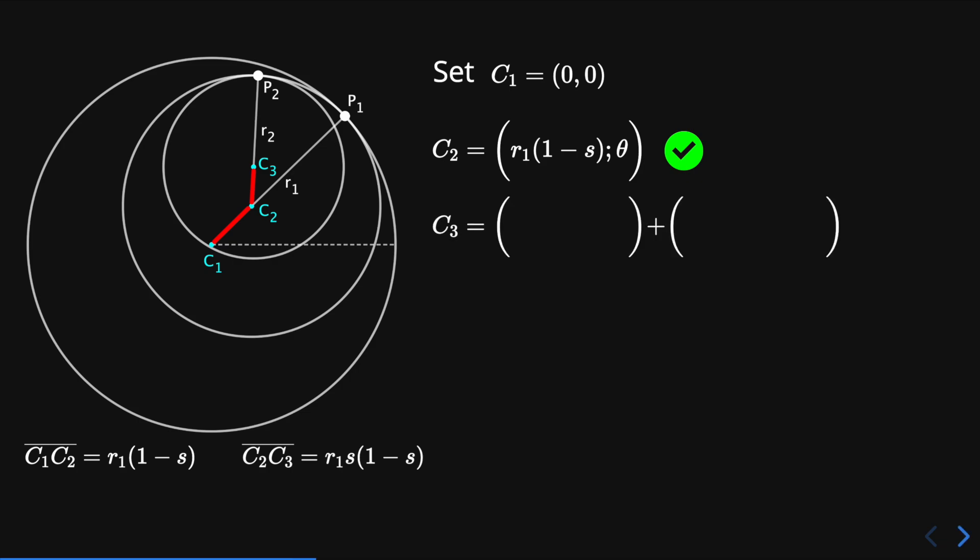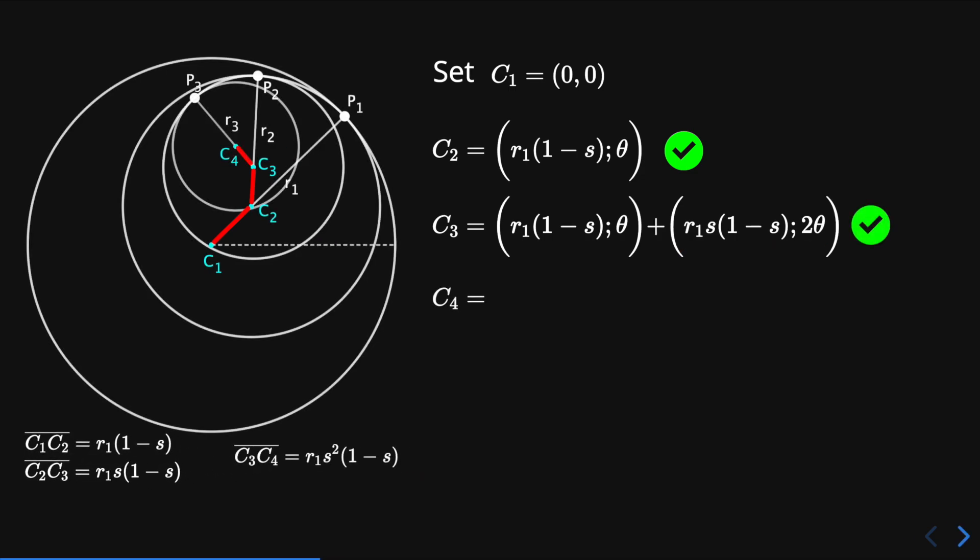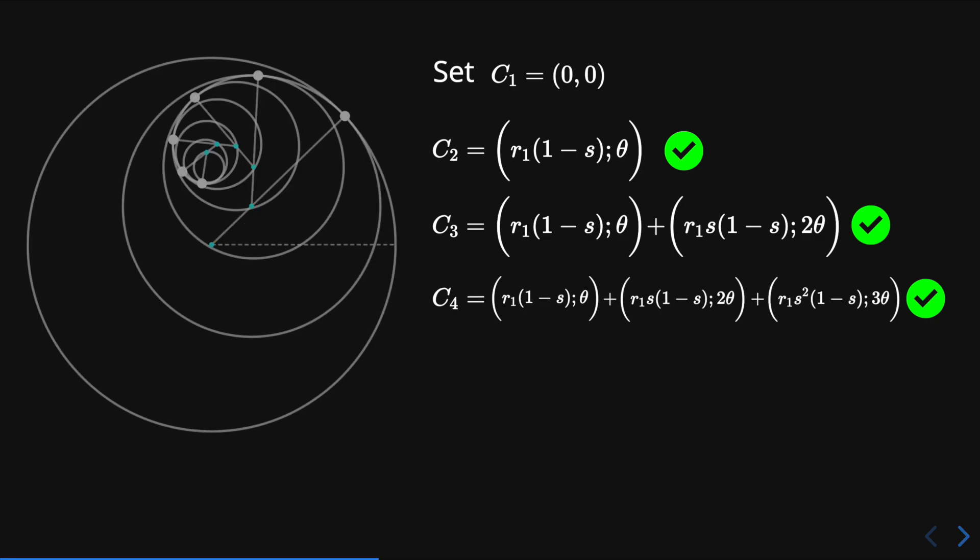The polar coordinates of the next point c3 is the sum of two points. The first has radius r1 times 1 minus s and angle theta. The second has radius r1 times s times 1 minus s and angle 2 times theta. Now the point c4 is going to be the sum of the previous two points plus an extra point. This new point has radius r1 times s squared times 1 minus s and angle 3 theta. Following this pattern we can find the general case cn, written here using the sigma notation.